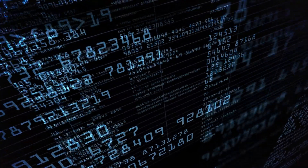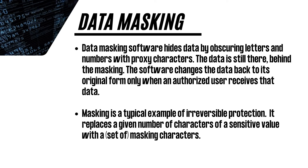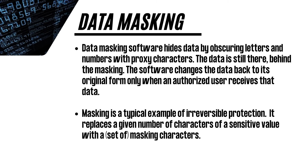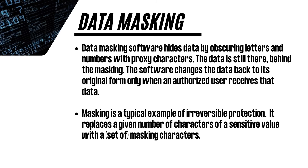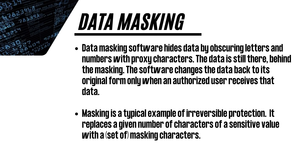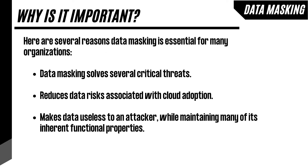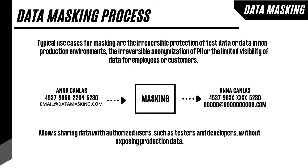Data masking software hides data by obscuring letters and numbers with proxy characters. The data is still there behind the masking. The software changes the data back to its original form only when an authorized user receives that data. Masking is a typical example of irreversible protection — it replaces a given number of characters of a sensitive value with a set of masking characters. Data masking solves several critical threats, reduces data risks associated with cloud adoption, and makes data useless to an attacker while maintaining many of its inherent functional properties. Typical use cases include the irreversible protection of test data or data in non-production environments, the irreversible anonymization of PII, or the limited visibility of data for employees or customers. It allows sharing data with authorized users, such as testers and developers, without exposing production data.